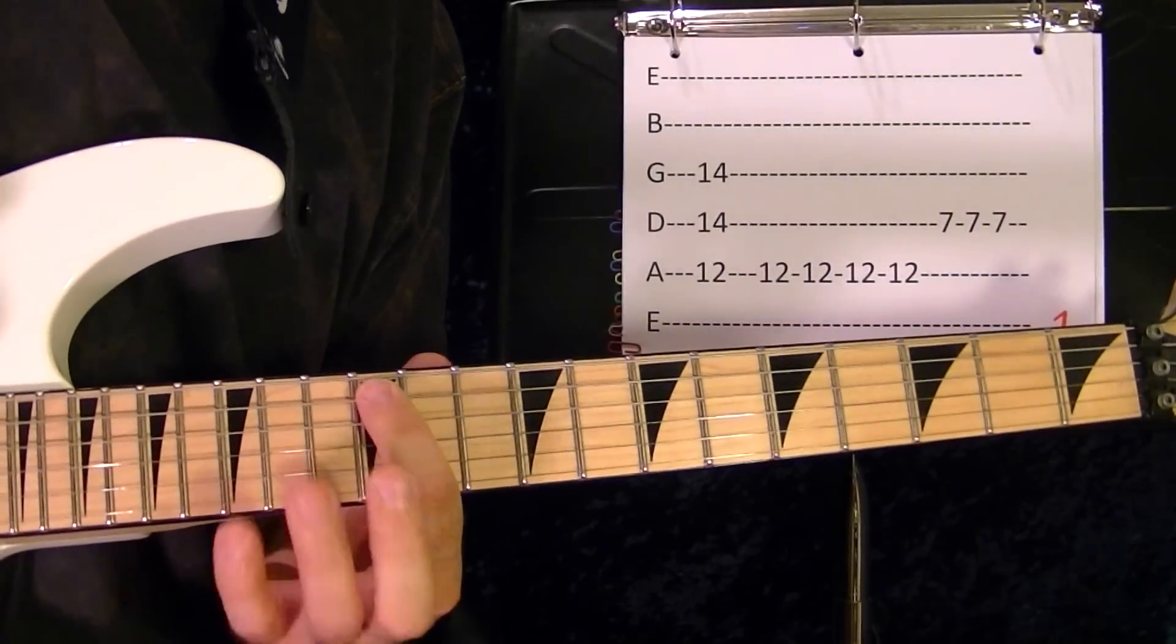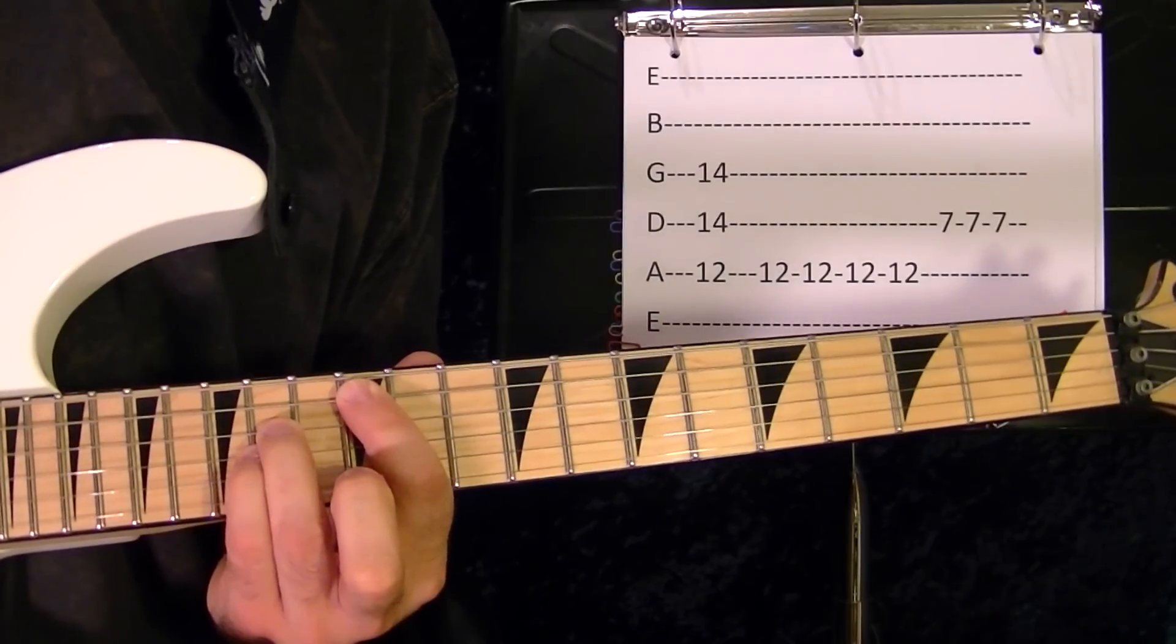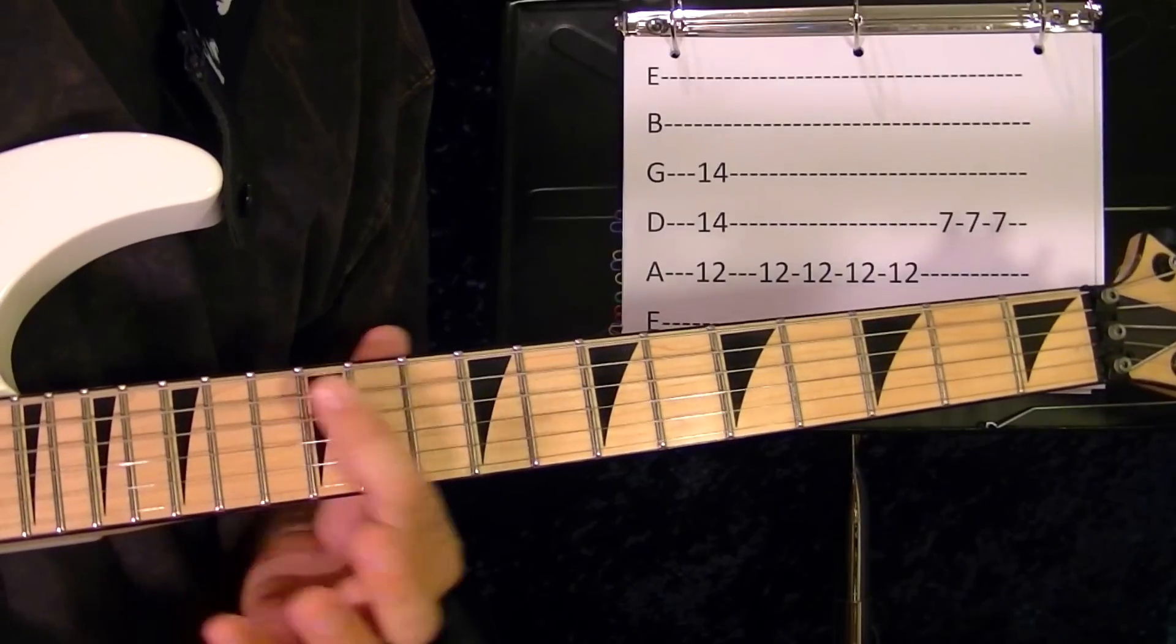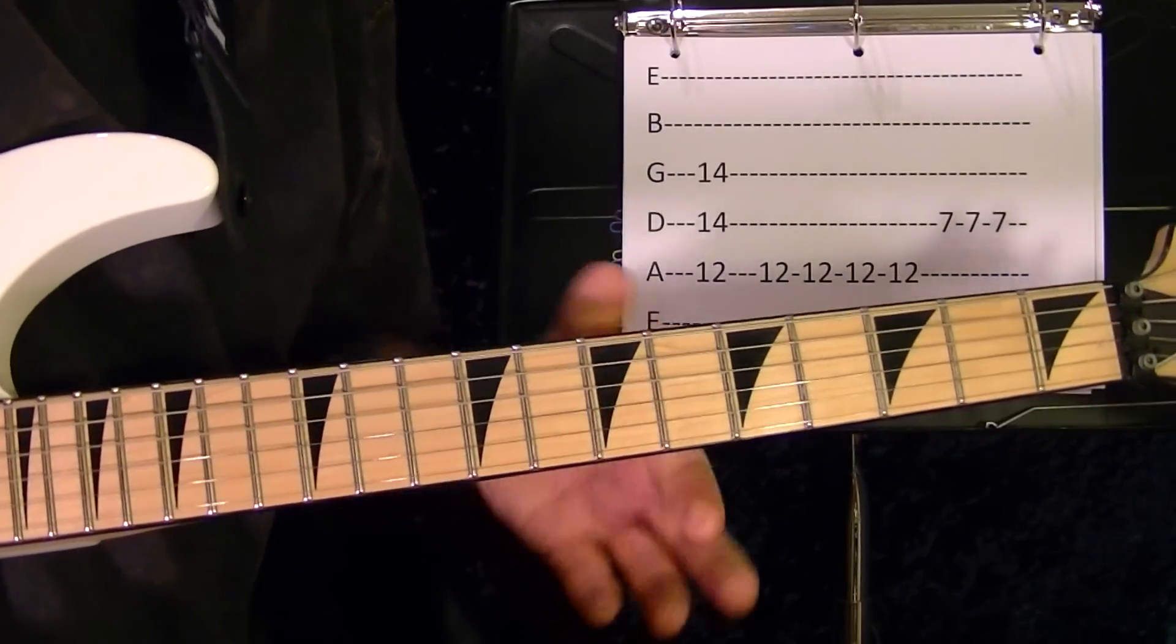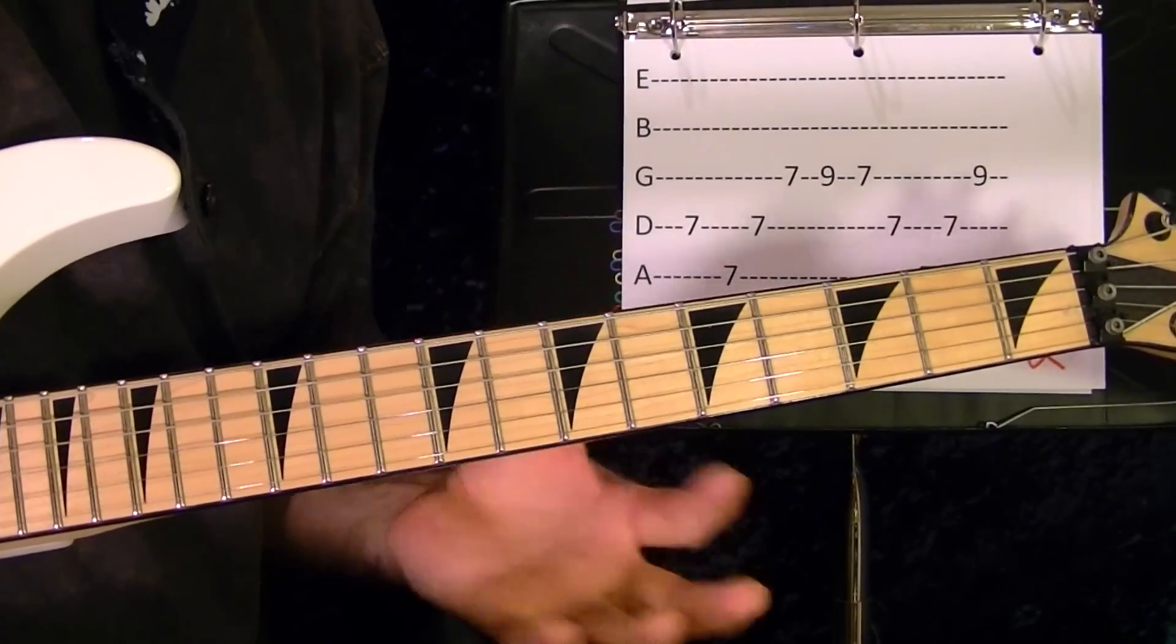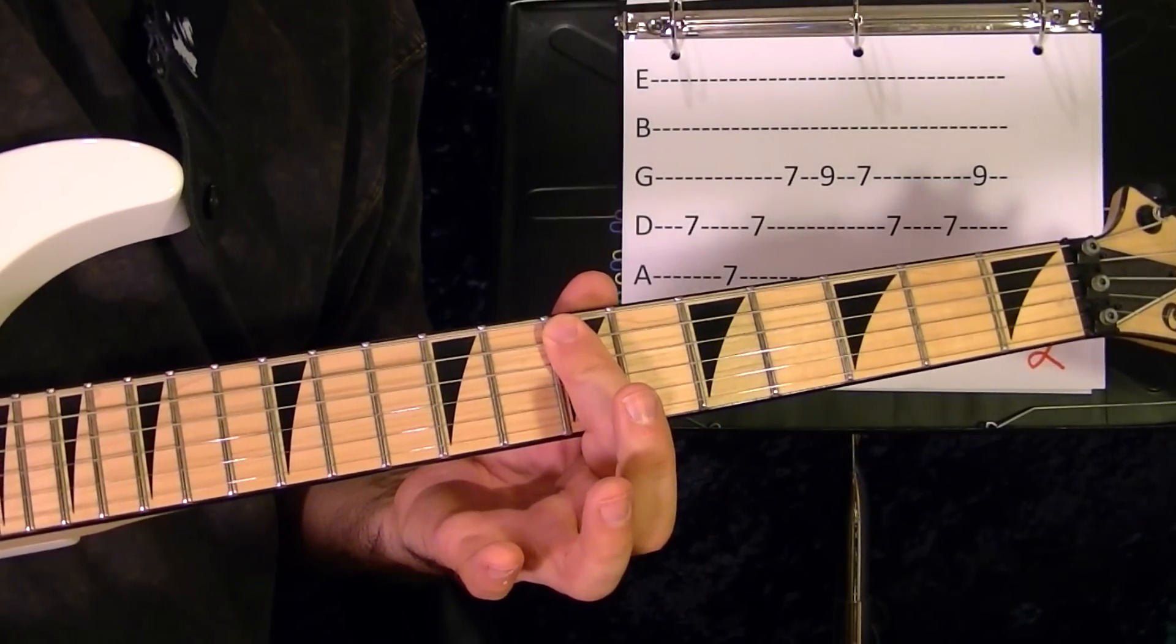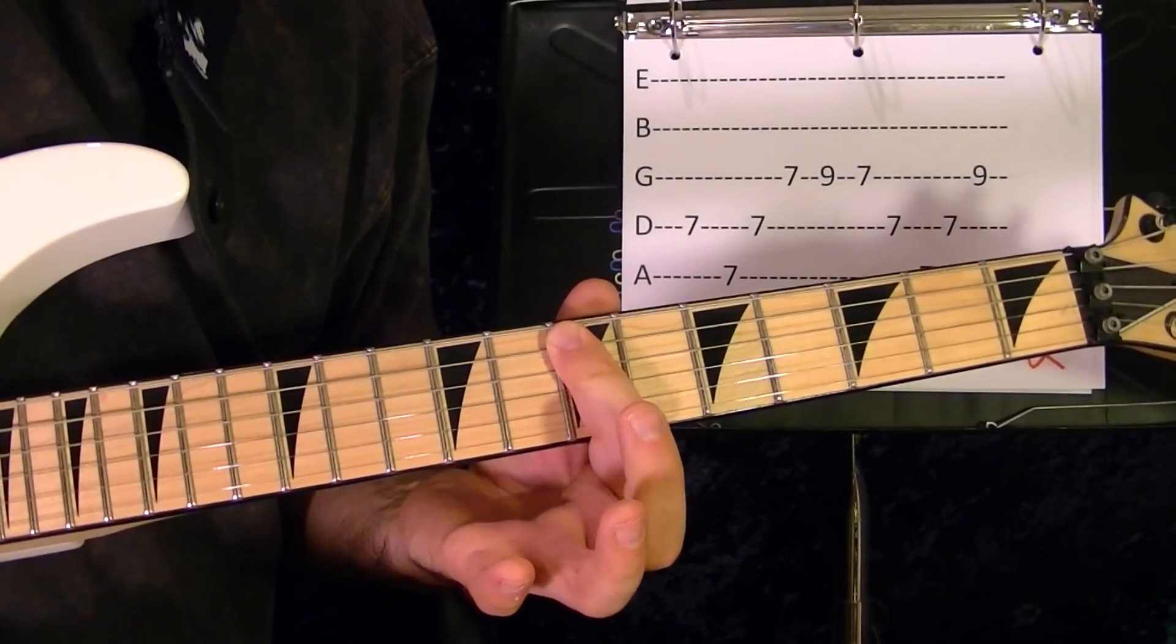So first one: there's a power chord, fifth string twelfth fret A. Then four times the fifth string twelfth fret, then three times on the fourth string seventh fret. Your bar like that, seventh fret, then play the fourth string seventh fret, fifth string seventh.